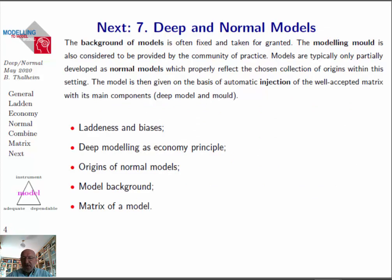This lecture will be on deep and normal models. The background of models is typically taken for granted. The modeling mold is also typically taken for granted, especially in our community of practice. The normal model is only what should be added to this background, this modeling mold, and the experience we have gained so far. That means we have some kind of injection of whatever we have been learning. We first start with laderness and biases, then deep modeling as an economic principle, the origins of normal models, model background, and finally the matrix of a model.